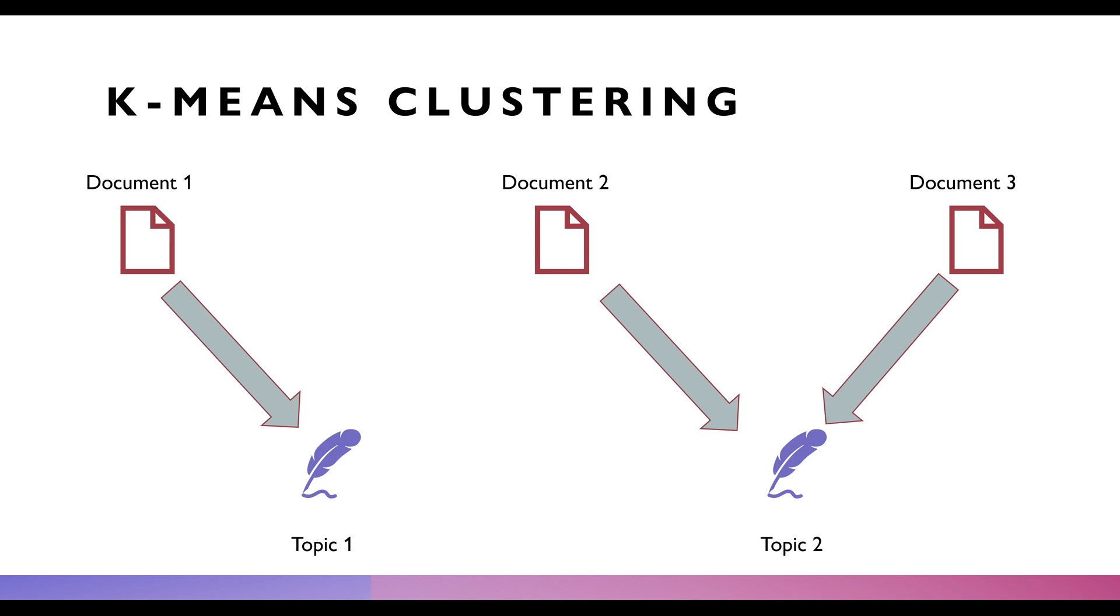However, we as humans know that documents have multiple topics within them, especially longer texts. In my opinion, I always try k-means clustering as a first step, but I've found it works better with shorter texts, such as those TRC descriptions we saw in part two.